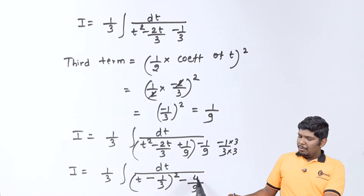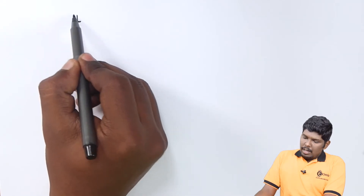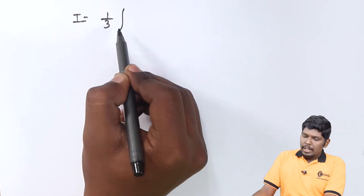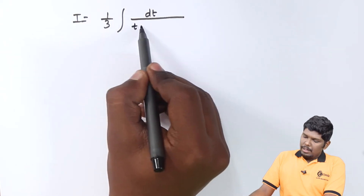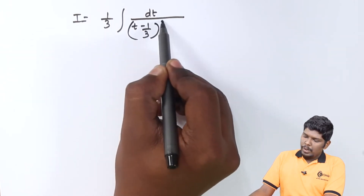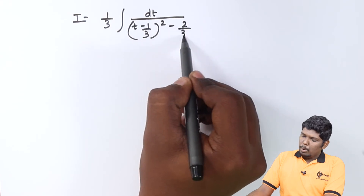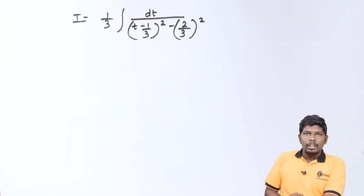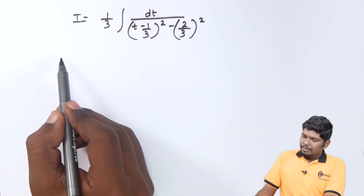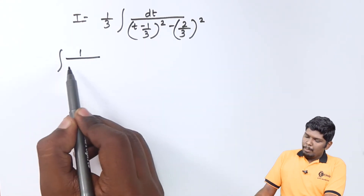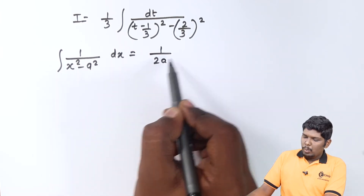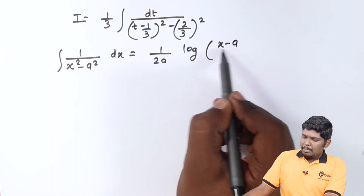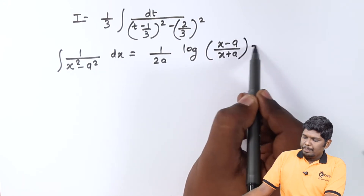We will write 4/9 as (2/3)². You can see this integral can be compared with the standard formula: integral of 1/(x² minus a²) dx equals (1/2a) log|(x minus a)/(x plus a)| + C.